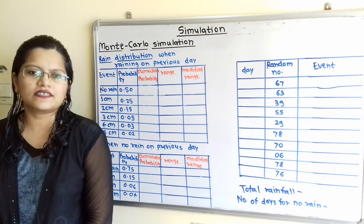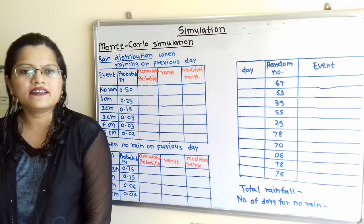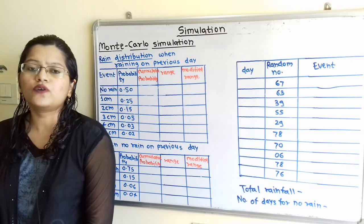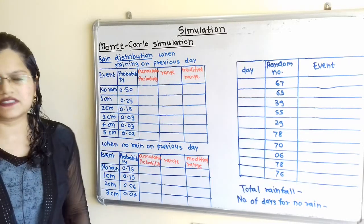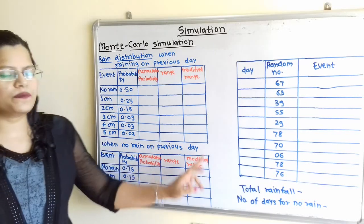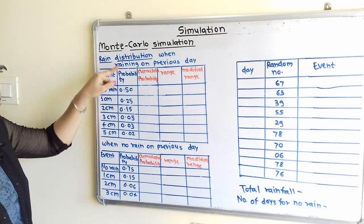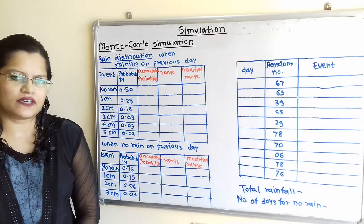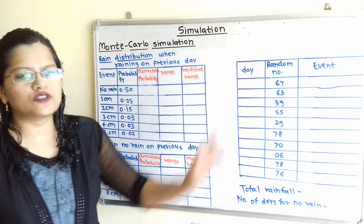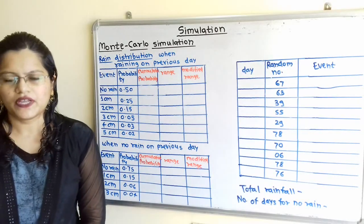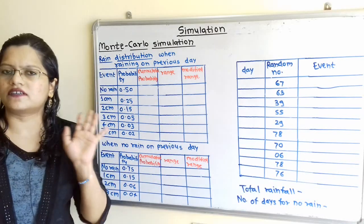Let us understand the given data as mentioned in the question. Rain distribution is mentioned for two conditions: first, when raining on the previous day, and when there is no rain on the previous day. For these two conditions, events with probabilities are mentioned in the question. There are 10 random numbers also mentioned in the question.